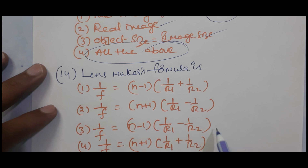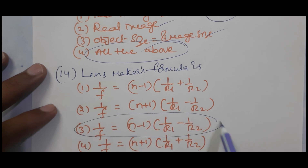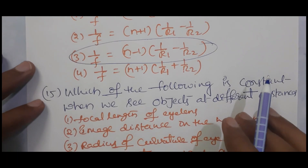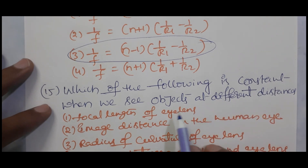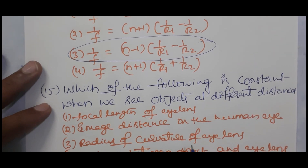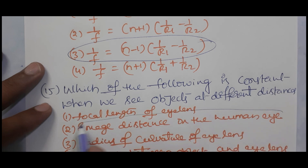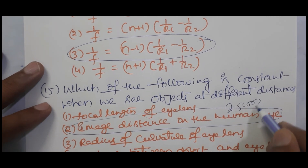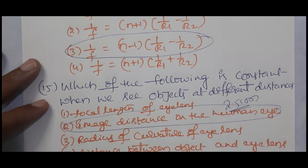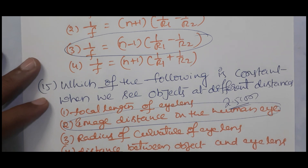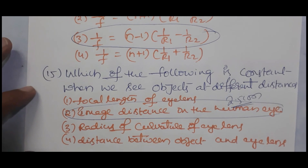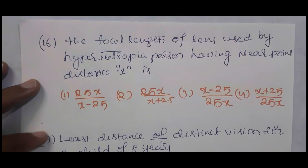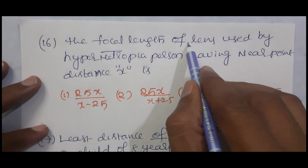The lens maker's formula is: 1/f = (n − 1)(1/R₁ − 1/R₂). Next: which quantity is constant when we see objects at different distances? The image distance in the human eye is always constant at 2.5 cm — that is the distance from the optic center of the eye lens to the retina. So image distance is always 2.5 cm.